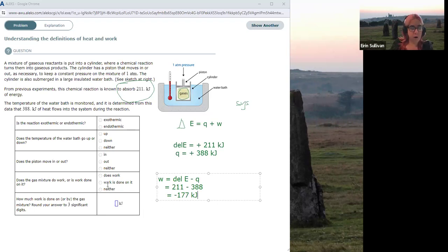Okay, so now we are going to have to fill in what is going on here. So these first two questions, is the reaction exothermic or endothermic, is talking about the flow of heat. Okay, so we know that the heat is flowing into the system. That is what we define as an endothermic reaction because the system is absorbing heat from the surroundings, which the water bath is part of. Therefore, the temperature of the water bath has to go down because that heat is being absorbed by the gases.